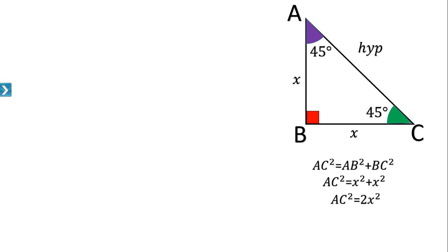AC² = 2x². Therefore AC = √(2x²) = √2 · x. So AC = √2x. We now have: AB = x, BC = x, and AC = √2x. Now let us find the trigonometric ratios for angle 45 degrees.